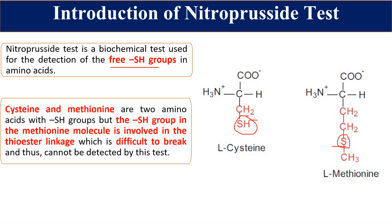Cysteine and methionine are the two amino acids having sulfur. However, the SH group of methionine is in the middle of the chain as a thioether linkage, which is very difficult to break. So this is less reactive sulfur, and because of this, methionine is not easily detected by this test. That is why this test is specific for cysteine, not for methionine, even though both amino acids contain sulfur.